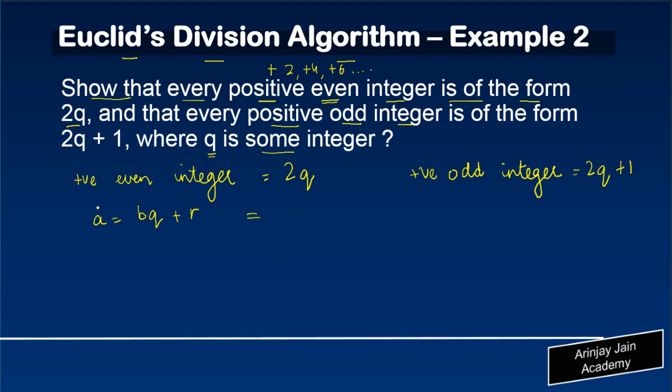If we assume that a over here, and you know that a is the larger number, b is the smaller number, and r, what was the property of r? r was greater than equal to 0, but less than b.